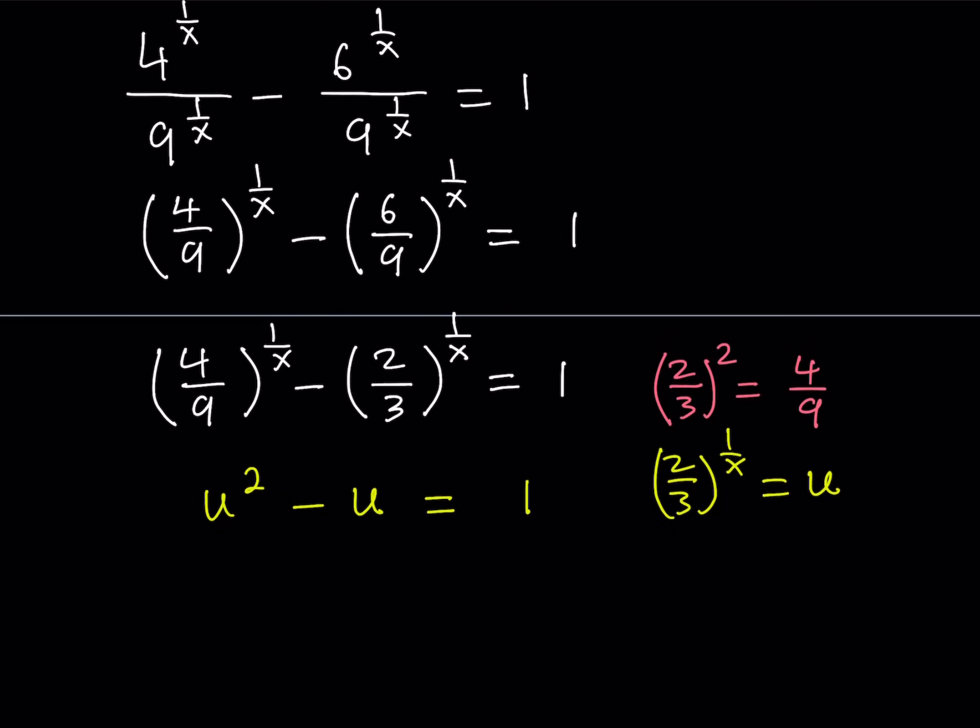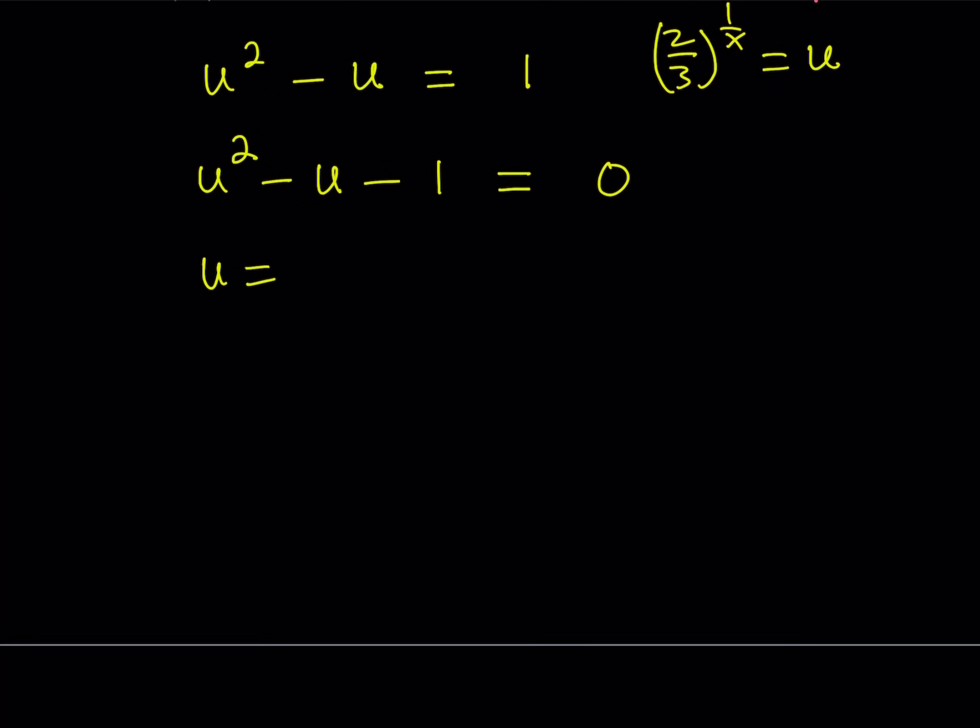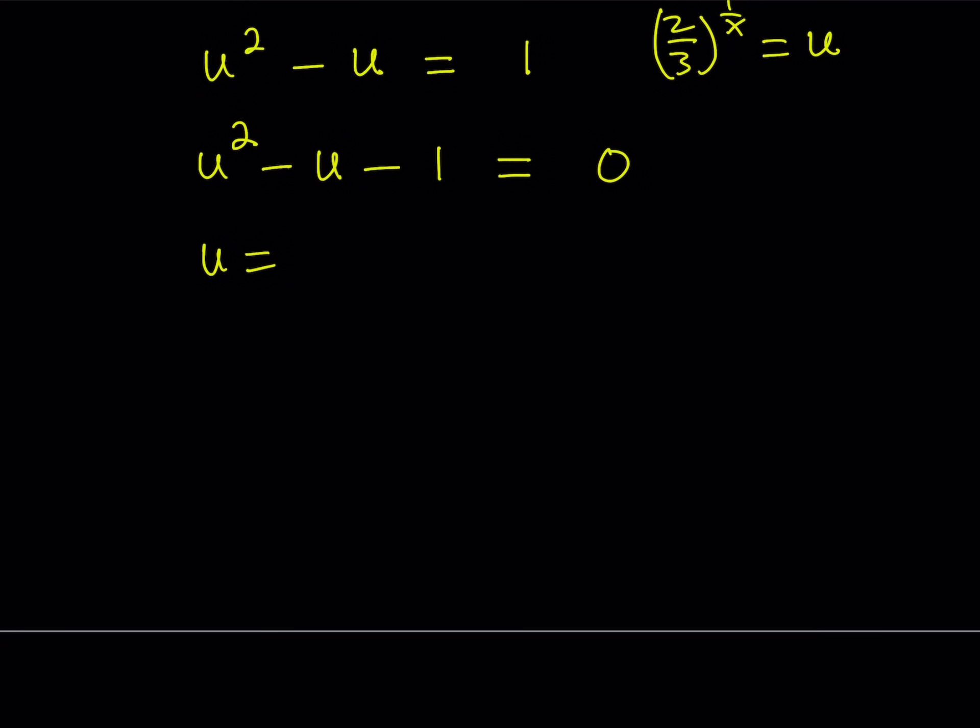But right now, it turned into something much nicer, which is a quadratic. So, let's go ahead and put everything on the same side and solve this quadratic using the quadratic formula. And you're going to be surprised with the result because there's something interesting about one of the solutions. So, let's go ahead and subtract 1 from both sides and get our complete quadratic. Now, let's use the quadratic formula.